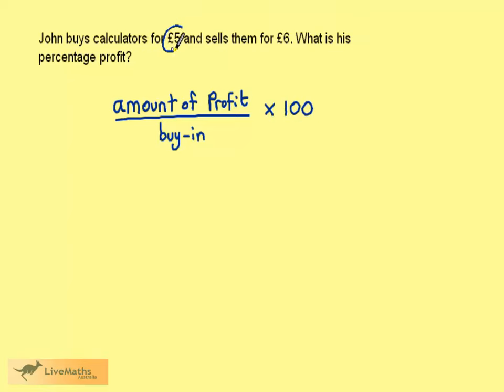He buys them for £5. He sells them for £6. That means that his profit for each calculator is £1.